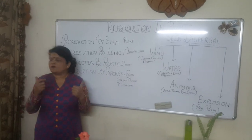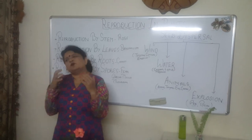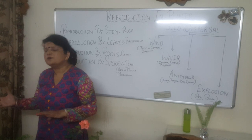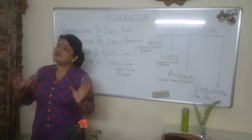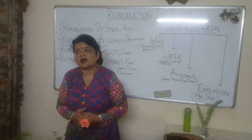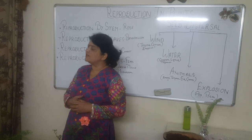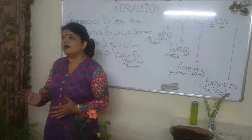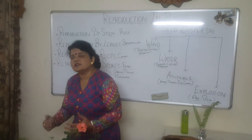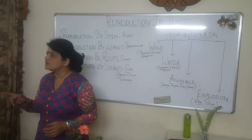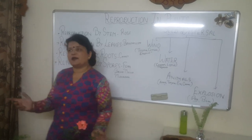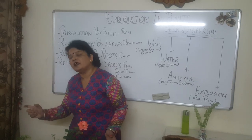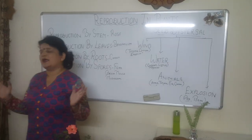Do you need a seed to grow a plant? No, it's not like that. We can grow a plant using its vegetative parts as well. We can grow a new plant with the help of a root, stem, or leaves. We can cut any part of the plant — a root, stem, or leaf — and grow any number of plants.